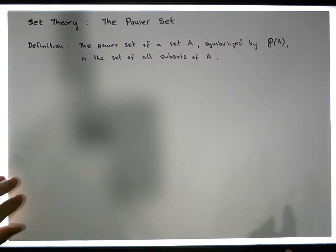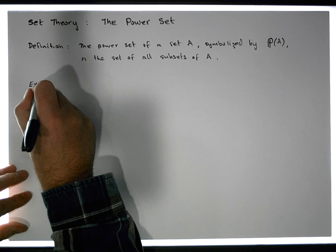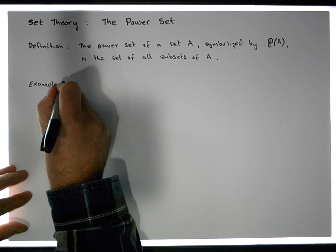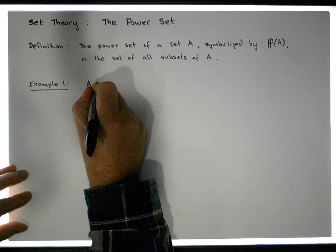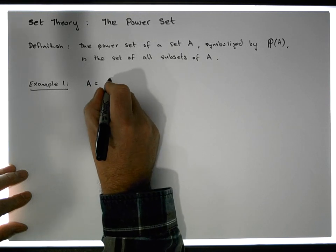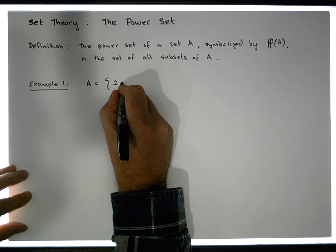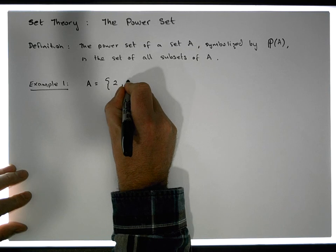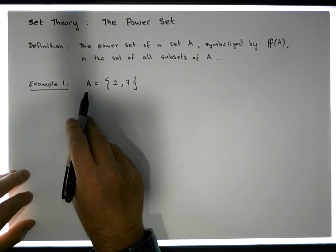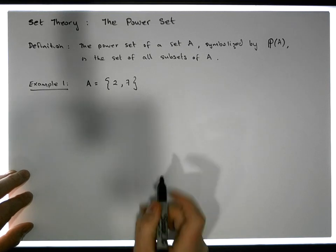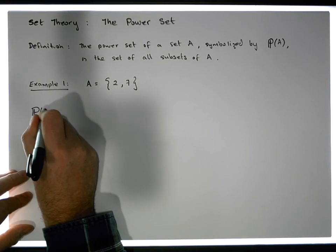Let's have a look at a couple of examples. For example one, let's keep this example small. Let's consider the set A that contains just two elements — the number two and the number seven. What we want to do is construct the power set of A.